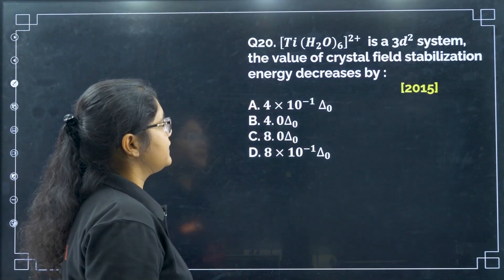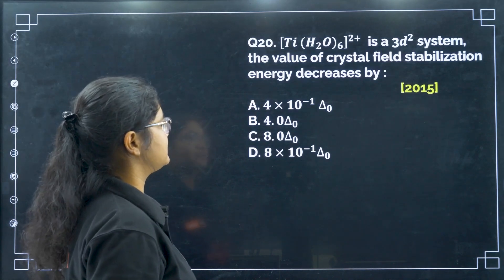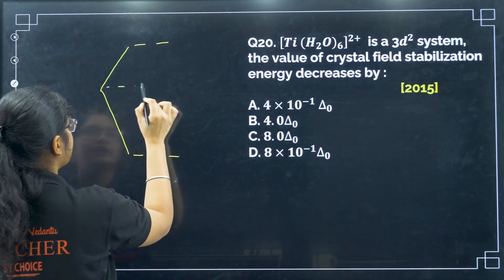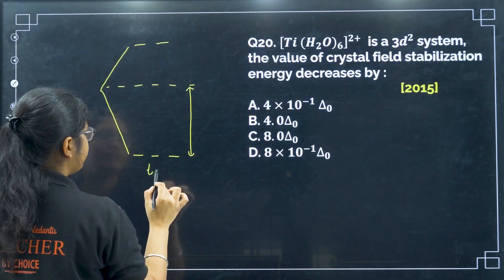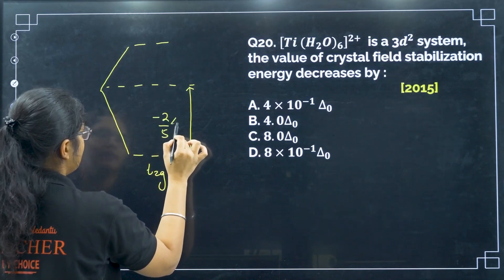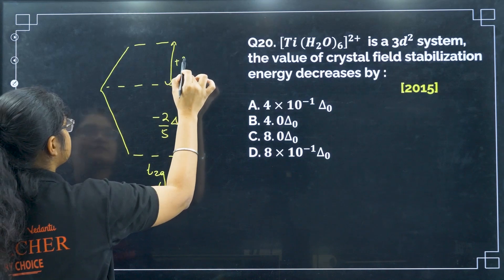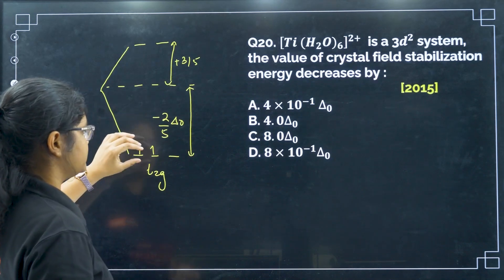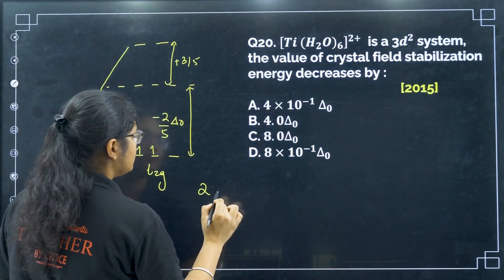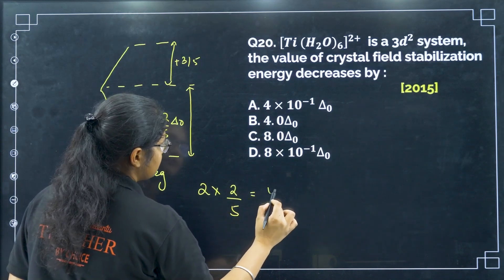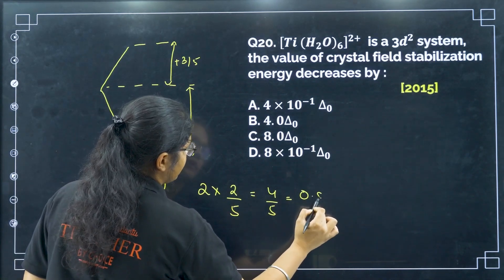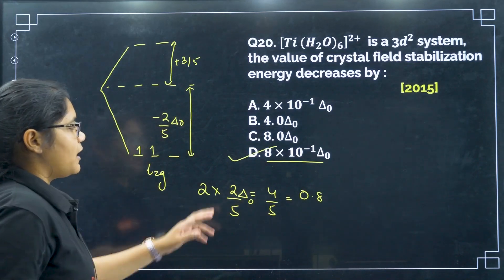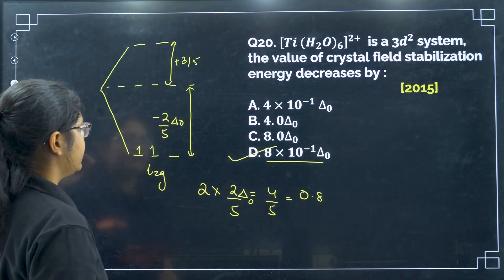Next, Ti(H2O)6 2+ is a 3d2 system. The value of the crystal field stabilization energy: in octahedral splitting, the T2G level goes down by −2/5 ΔO. For two electrons, multiply 2 × (2/5) = 4/5 ΔO = 0.8 ΔO = 8 × 10−1 ΔO.